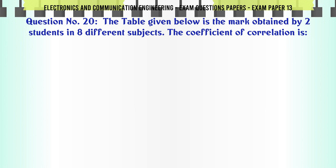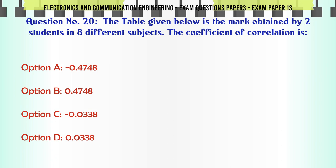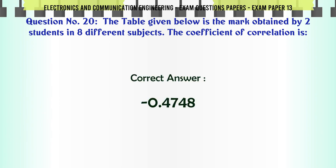The table given below is the mark obtained by two students in eight different subjects. The coefficient of correlation is: A: 0.4748, B: negative 0.4748, C: 0.0338, D: negative 0.0338. The correct answer is 0.4748.